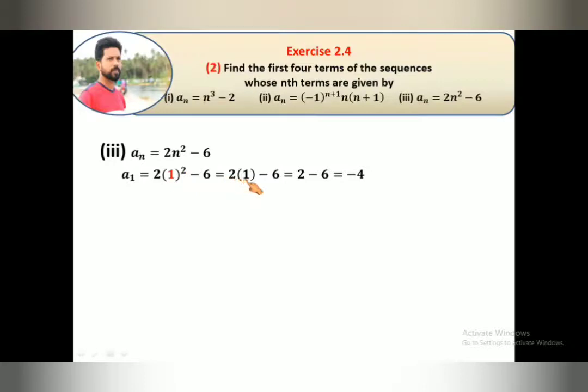1² - 6. 1² is 1, so 2 · 1 minus 6. Value of this one is 2, 2 - 6 equals -4.